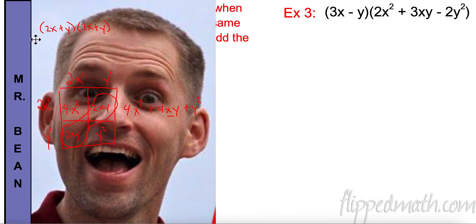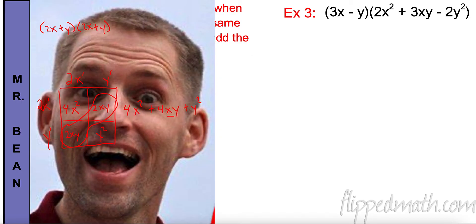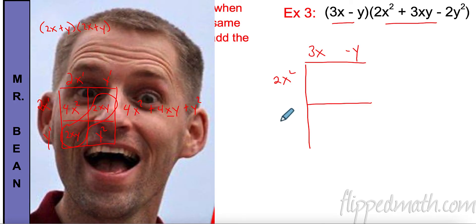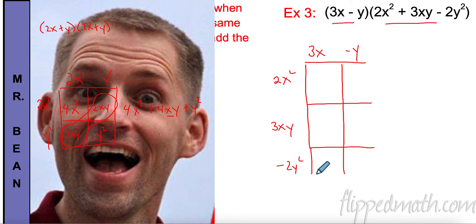If we're going too fast, that's okay — the great thing about this video is you can pause, rewind, and replay at any time. Now we have a binomial times a trinomial. I'll write out 3x and negative y across the top of my box, and 2x squared, 3xy, and negative 2y squared down the side.